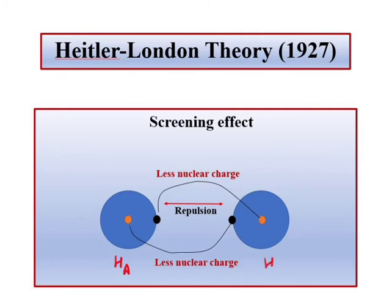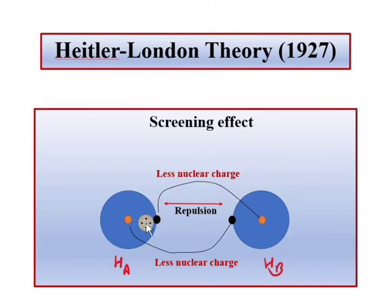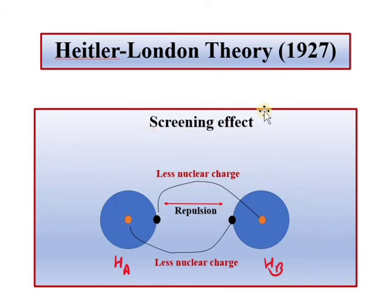इस repulsion को हम कहते हैं screening effect — यह electron उस electron को screen कर रहा है, shield कर रहा है, ताकि H_A का electron उस nucleus से उतना attract न हो जितना होना चाहिए था। इसी तरह H_B का electron भी उस nucleus से उतना attract नहीं है। Screening effect की वजह से दोनों nucleus एक दूसरे के electron को effectively attract नहीं कर रहे — यहाँ पर effective nuclear charge का concept आया।